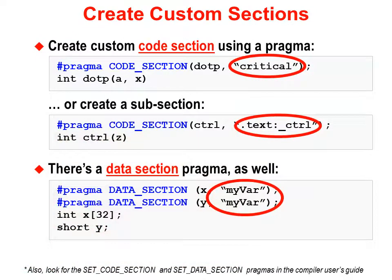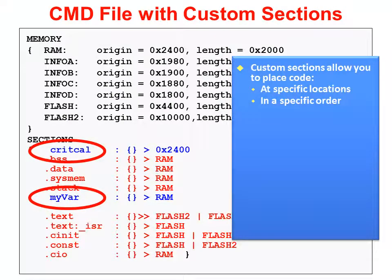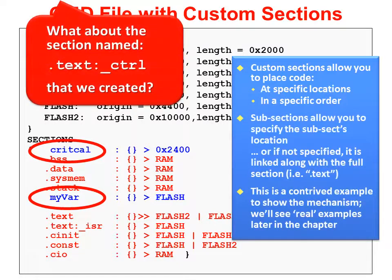Let's see how our modified linker command file handles these new custom section names. We linked the section 'critical' to a specific address — while this isn't done very often, it is a valid way to link a section. We also linked 'myvar' to RAM. What about the section name '.text:_CTRL' that we created? The colon in the name means it's a subsection — _CTRL is a subsection of .text. If we don't specifically call it out in the linker command file, subsections just get allocated along with their parent section, in this case .text.